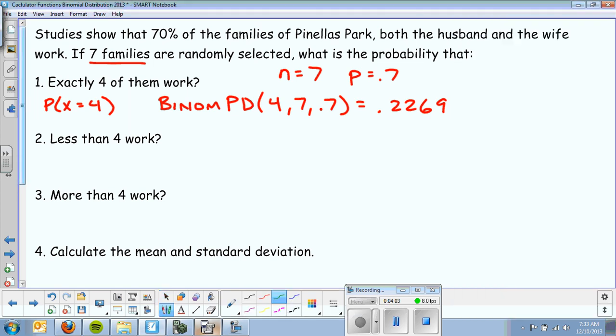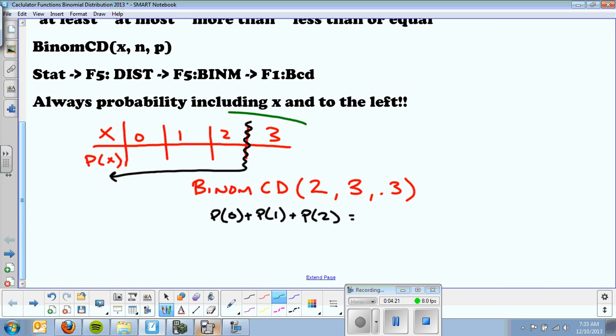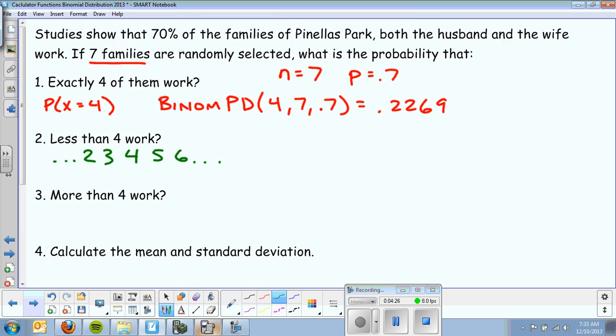Now the next problem says less than 4 work. So out of 7, what's the probability that less than 4 work? What I like to do is do a little dummy table. So 4 is an important number. And I'm going to pretend that I'm making a probability distribution, and I just pick a couple numbers each way. So I'm basically just drawing the top part of this chart to give me a visualization for what the problem is asking. So it says less than 4 work. Now, less than 4 does not include the number 4. So it's actually 3 or less. So I'm going to type in binomial CD.